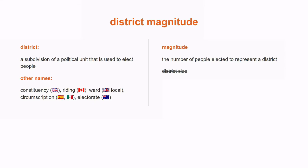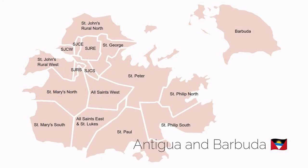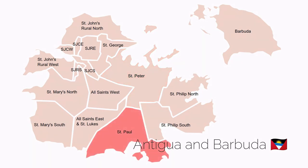Let's take some examples. Here's a map of all of the electoral districts in Antigua and Barbuda. Antigua and Barbuda uses 17 constituencies to elect its House of Representatives. Each of these constituencies, often named after saints, elects a single member of parliament. St. Peter elects a single member, St. Paul elects a single member, and St. George elects a single member. The district magnitude is always one.